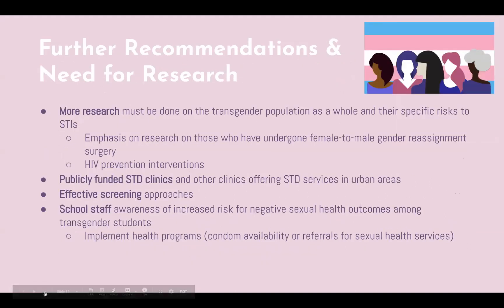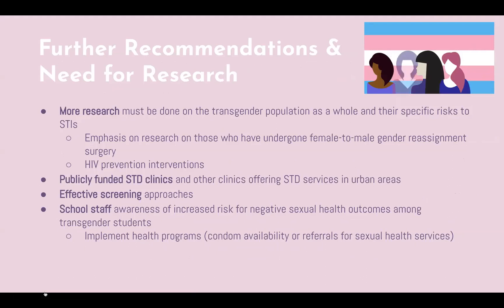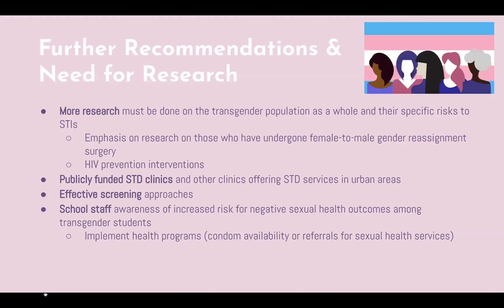More research must be done on the transgender population as a whole and their specific risk to STIs, with an emphasis on those who have undergone female-to-male gender reassignment surgery, as well as tailoring HIV prevention interventions towards transgender populations. More publicly funded STD clinics or services should appear in urban areas, acting as a safety net provider for the sexual health needs of at-risk transgender communities. To prevent false negative results, more effective screening approaches should be created. School staff should also be more aware of the increased risk for negative sexual health outcomes among transgender students, and should implement health programs as well as condom availability or referrals to specific sexual health services.